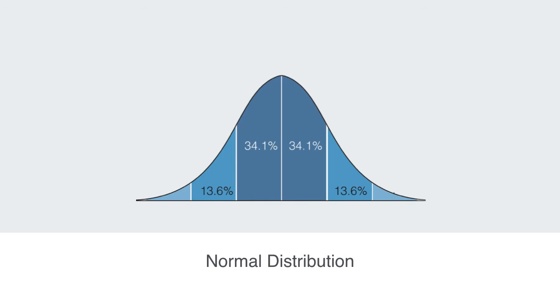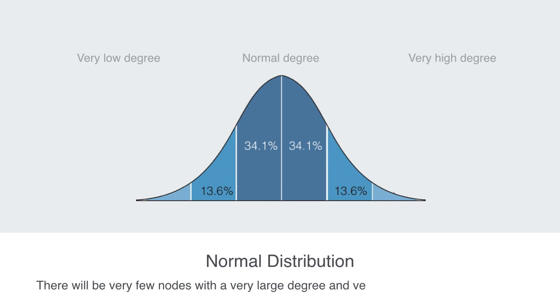If we looked at the degree distribution of this network, it would follow what is called a normal distribution. Because it was randomly generated, there will be some difference in the degree distribution of connectivity amongst the nodes — some will have one degree, some five — but there will be a well-defined normal or average degree. In this distribution, there will be very few nodes with a very large degree, and very few with a very low degree. Most will tend towards the normal amount of connections.